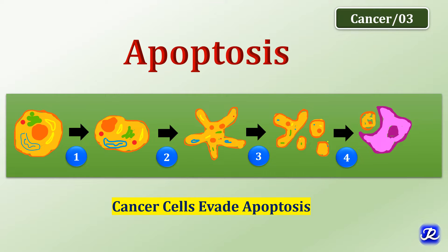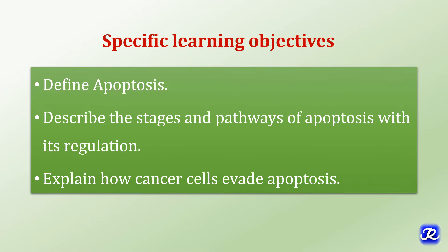Hello everyone. In this third video on biochemistry of cancer, let's study about apoptosis. Evasion of apoptosis is the hallmark of cancer. At the end of this session, you should be able to define apoptosis, describe the stages and pathways of apoptosis with its regulation, and explain how cancer cells evade apoptosis.